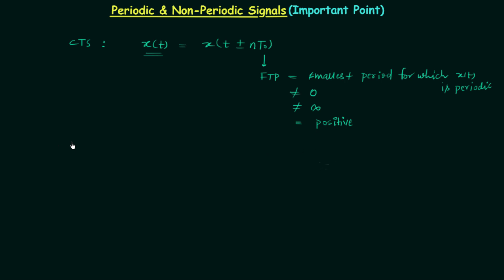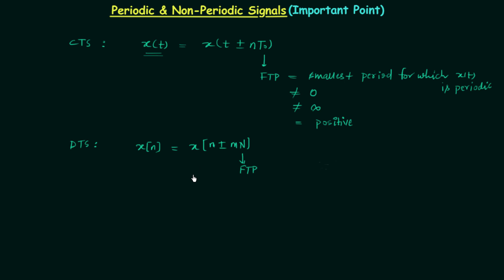For discrete time signals, the condition for periodicity says: if a discrete signal x[n] is periodic, then it should be equal to x[n ± mN], where capital N is the fundamental time period.